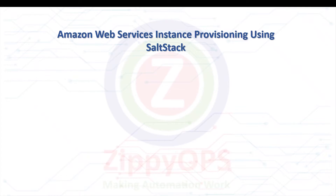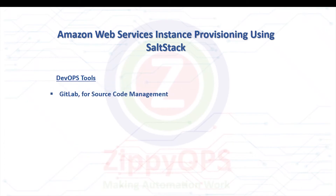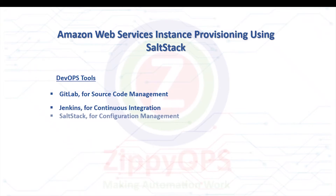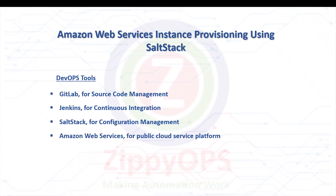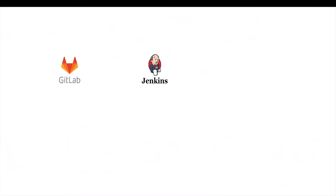SaltStack will provision three different operating systems: CentOS (Red Hat-based), Ubuntu (Debian-based), and Windows. The complete process is orchestrated through the Jenkins pipeline. The tools used in this AWS EC2 Instance Provisioning are: GitLab for source code management, Jenkins for continuous integration, SaltStack for configuration management, and Amazon Web Services for public cloud service platform. Let's explore the workflow of AWS EC2 Instance Provisioning using SaltStack, stage by stage.